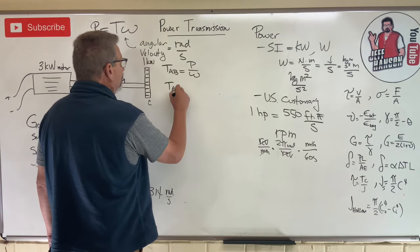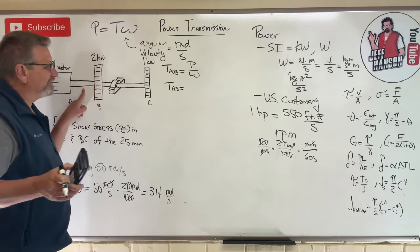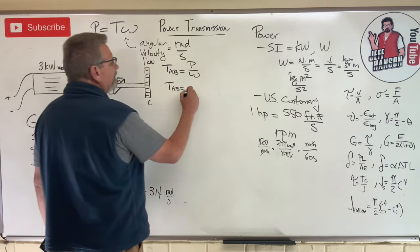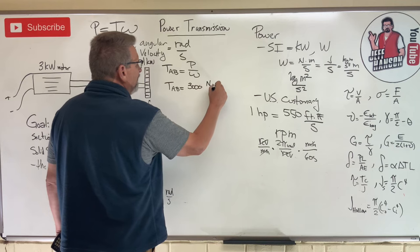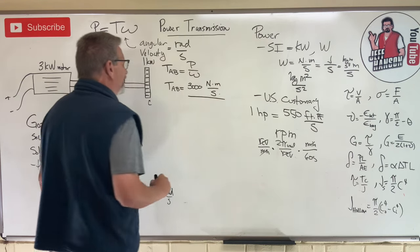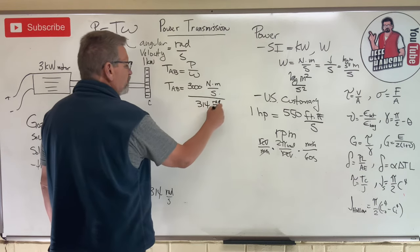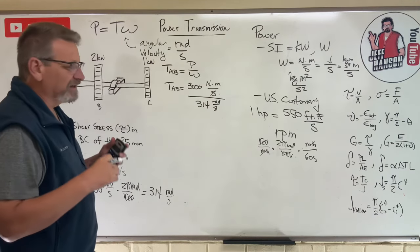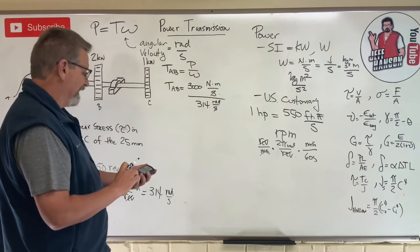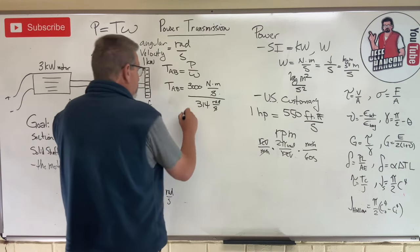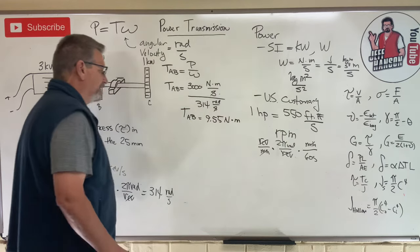So T_AB, the torque in section AB, is the power in section AB, which is 3 kilowatts. But let's put it in watts - 3000 watts, which is a newton meter per second, divided by omega, which is 314 radians per second. The seconds cancel out, the radians are unitless, and it leaves me with torque in newton meters, which is good stuff. 3000 divided by 314 equals T_AB. The torque in shaft AB is equal to 9.55 newton meters.